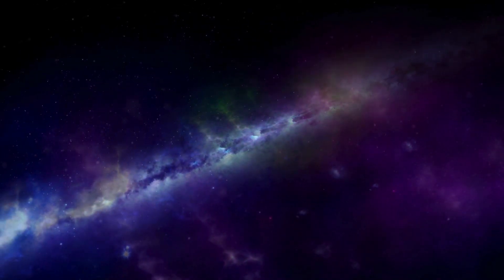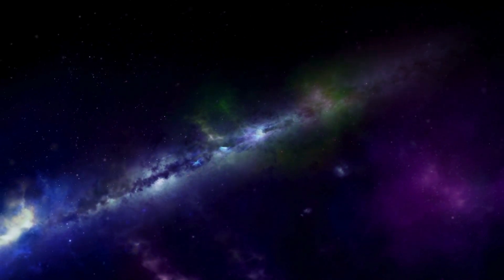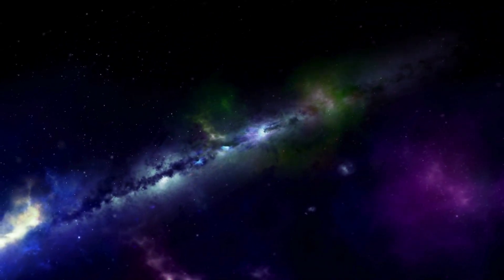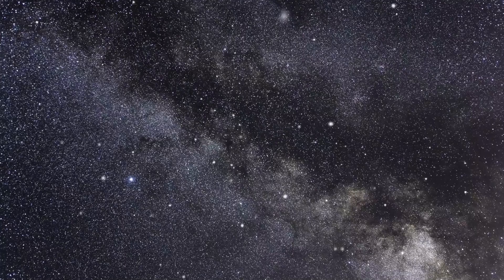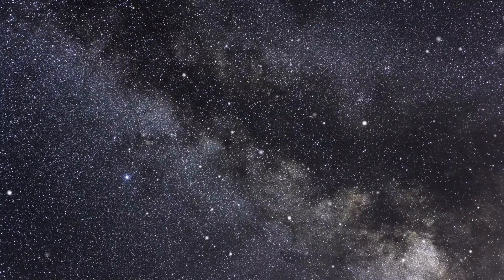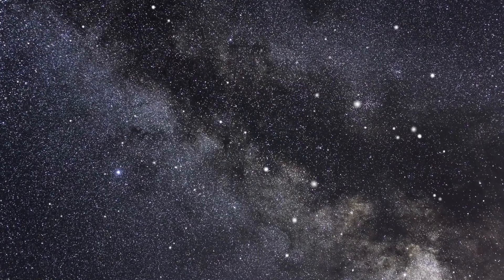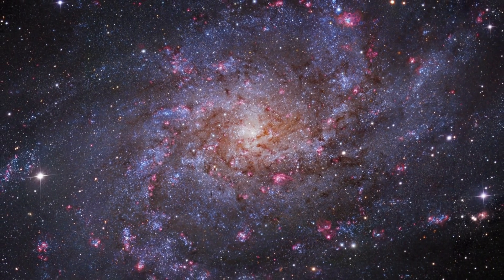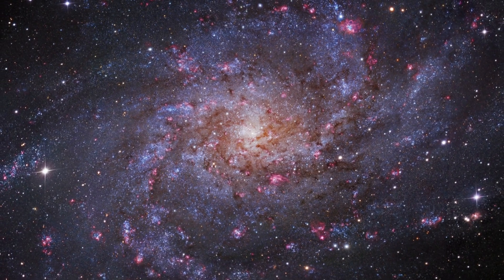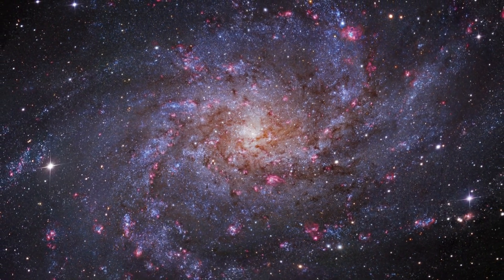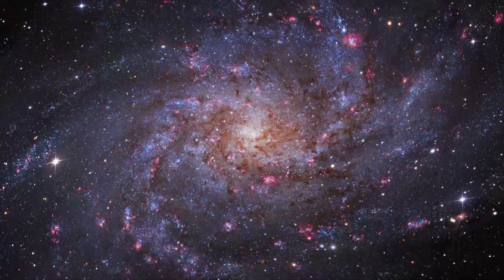The nearest galaxy to us is the Andromeda galaxy, and we think there are about 100 billion galaxies in the visible universe. Through his observations, Galileo demonstrated that the Milky Way was not at the center of the universe as previously believed but instead a vast expanse of stars scattered throughout space.